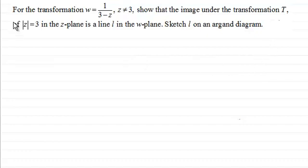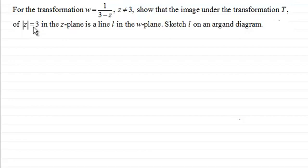So what we've got is: for the transformation W equals 1 over 3 minus Z, with Z not equaling 3, show that the image under the transformation T of the modulus of Z equaling 3 in the Z plane is a line L in the W plane. And we need to sketch L on an Argand diagram.